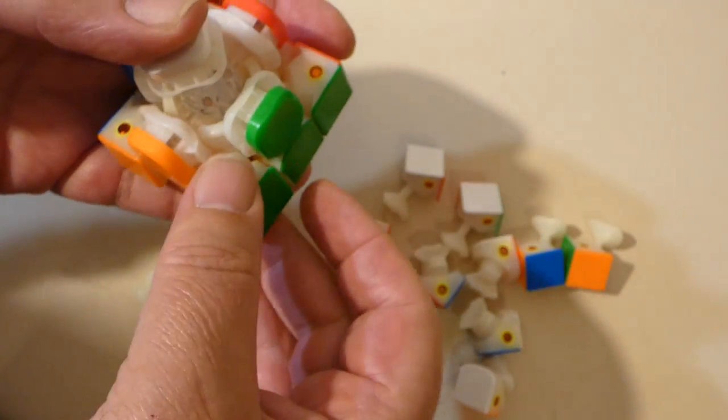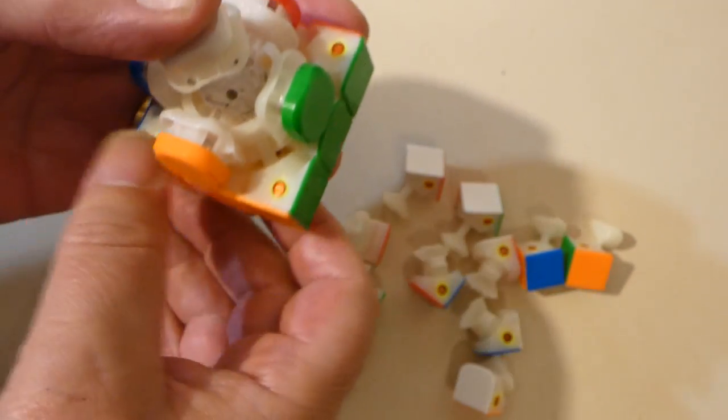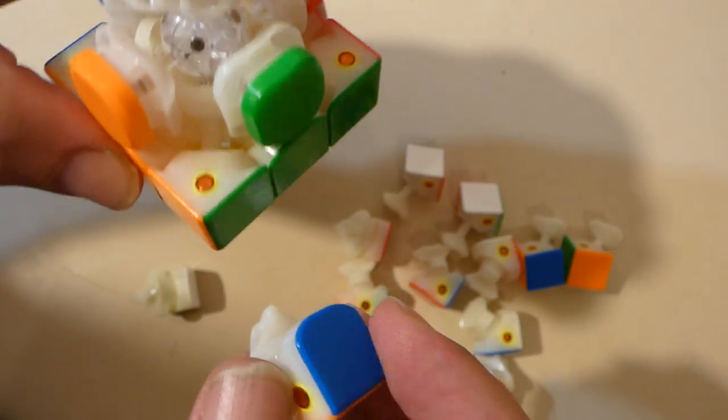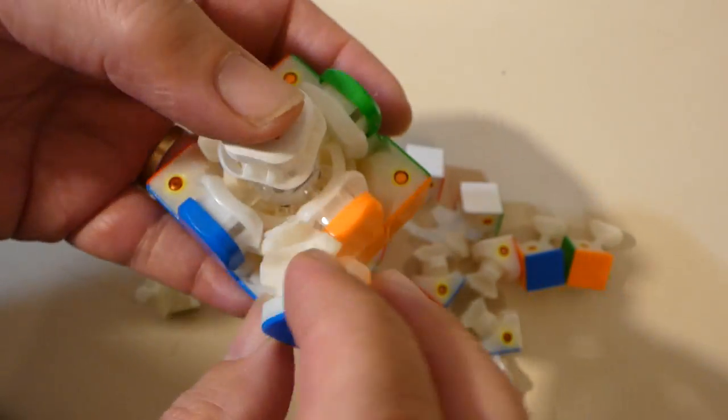And I could take these out as well and then take the edge pieces out, but I'm not going to do that because I want to put it back together quickly because I've got a cat outside. So what I'll do is put it back together again.